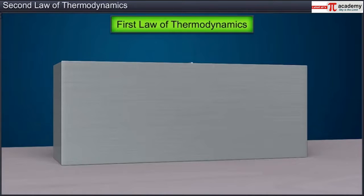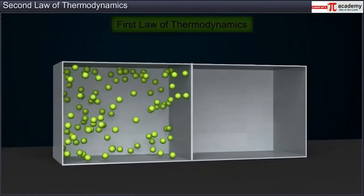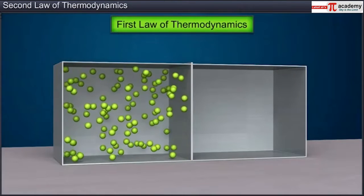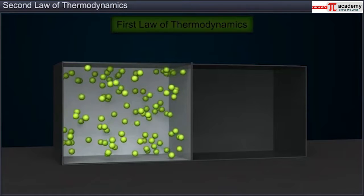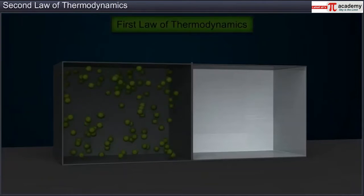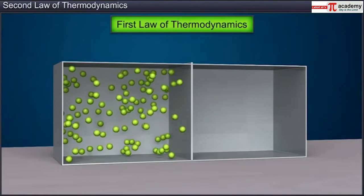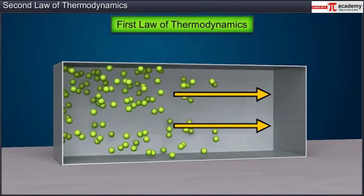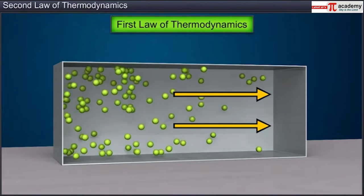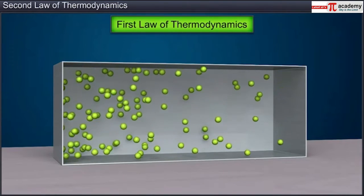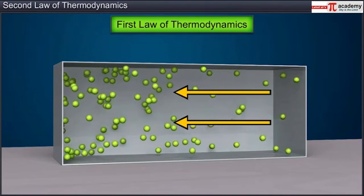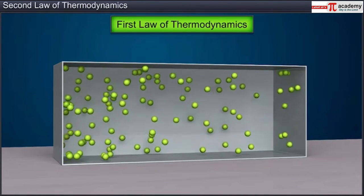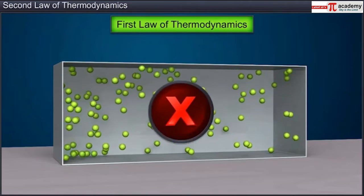Consider a metallic box with two chambers separated by a partition. One of the chambers is filled with a gas while the other is empty. Now if the partition is removed, the gas will diffuse to the other chamber.